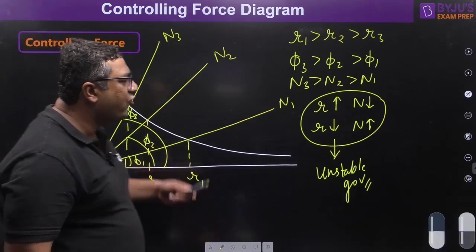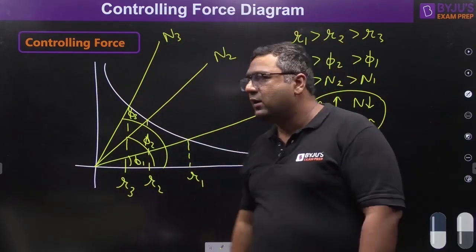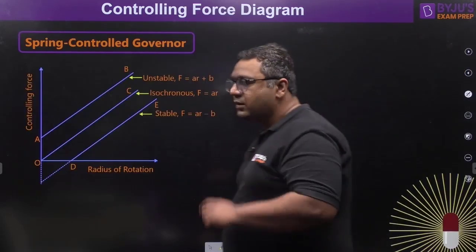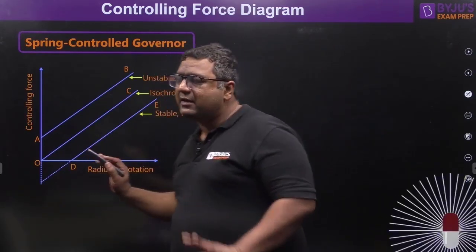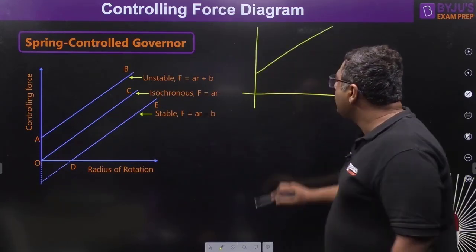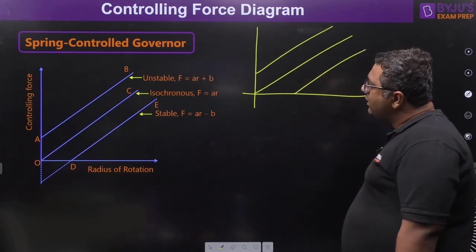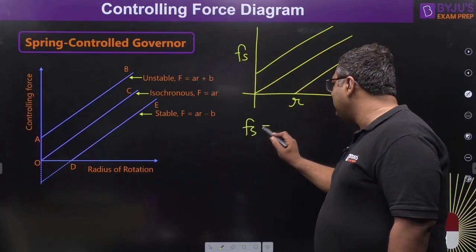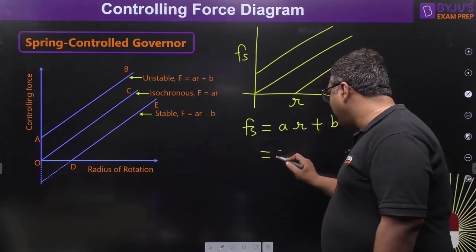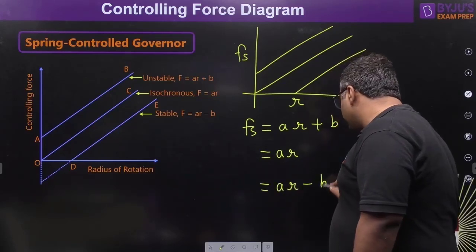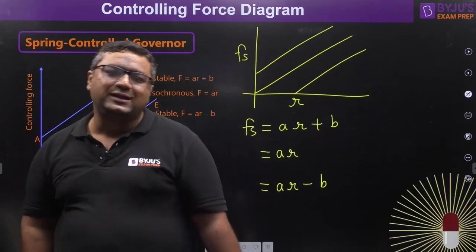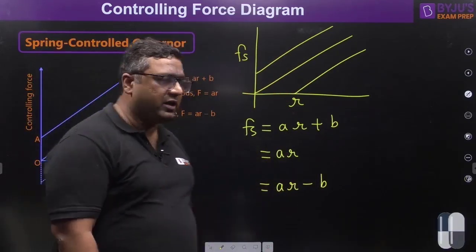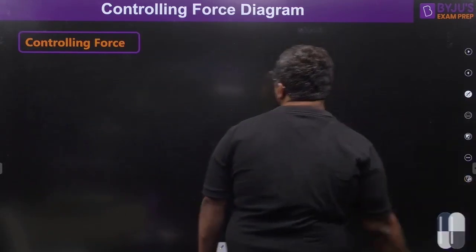The previous stable diagram applies to Watt, Porter, and Proel governors. For spring-controlled governors like Hartnell, the FC versus R diagram is a straight line. It can take one of three forms: FC = AR + B, FC = AR, or FC = AR − B. There is a shortcut technique to determine from the controlling force diagram whether the governor is stable, unstable, or isochronous.